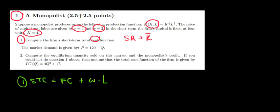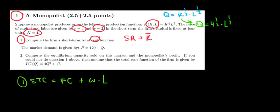Because the cost function has to be expressed in terms of quantity produced, we need labor as a function of quantity. So let's solve for labor in terms of quantity. We have the production function: quantity equals K to the power 1/2 times L to the power 1/2. We know capital is fixed at 4, so substituting: Q equals 4 to the power 1/2 times L to the power 1/2, which is square root of 4 times L to the power 1/2. Square root of 4 is 2, so Q equals 2 times L to the power 1/2.